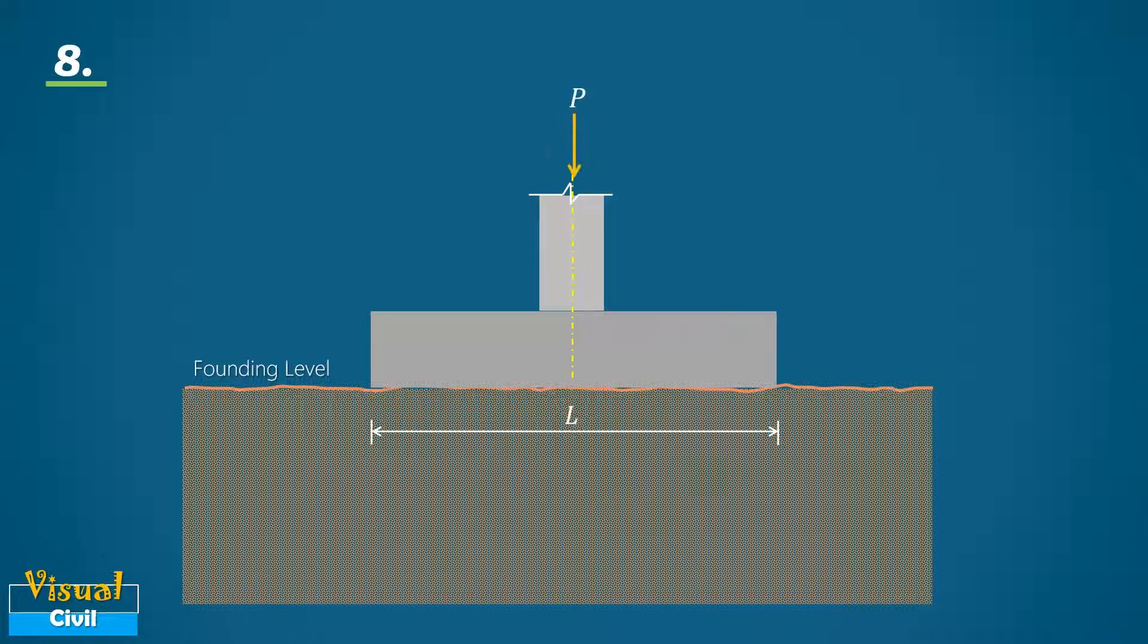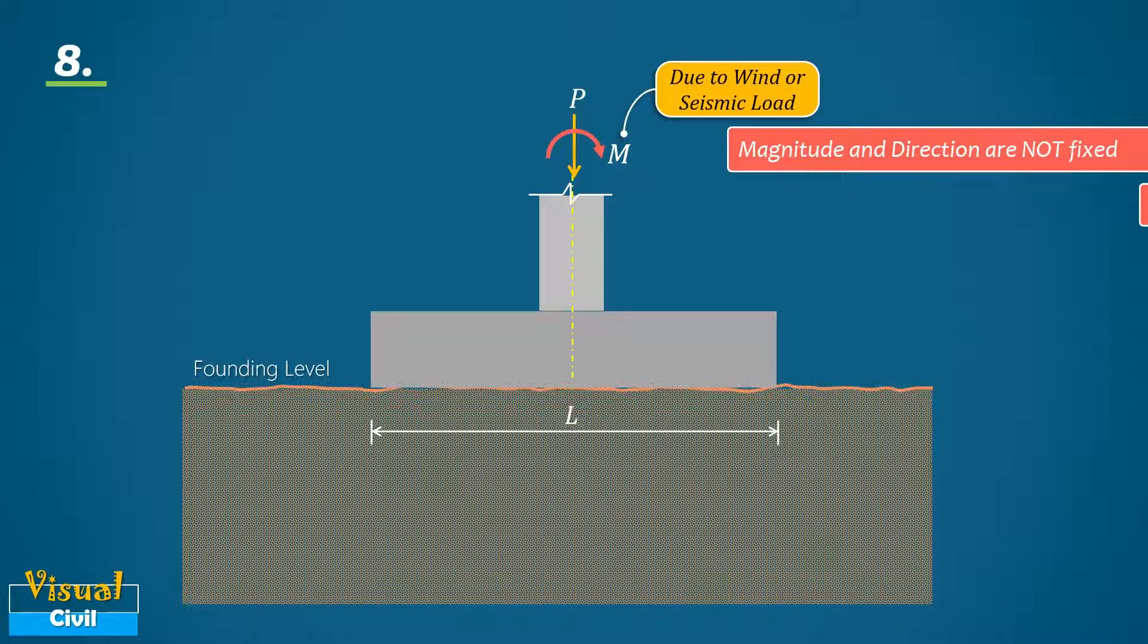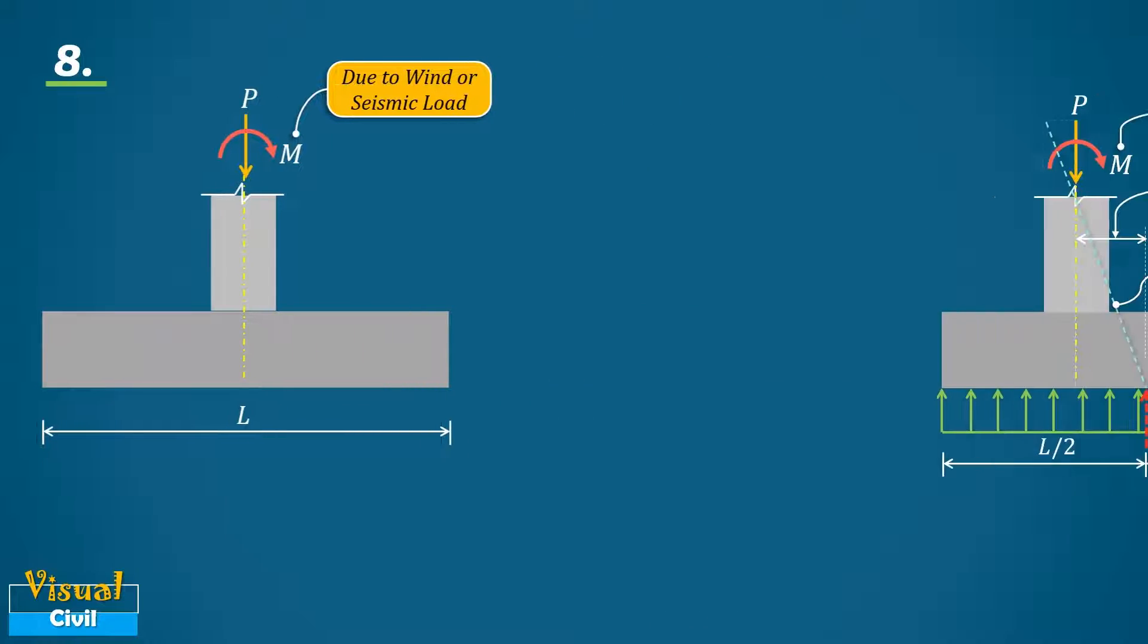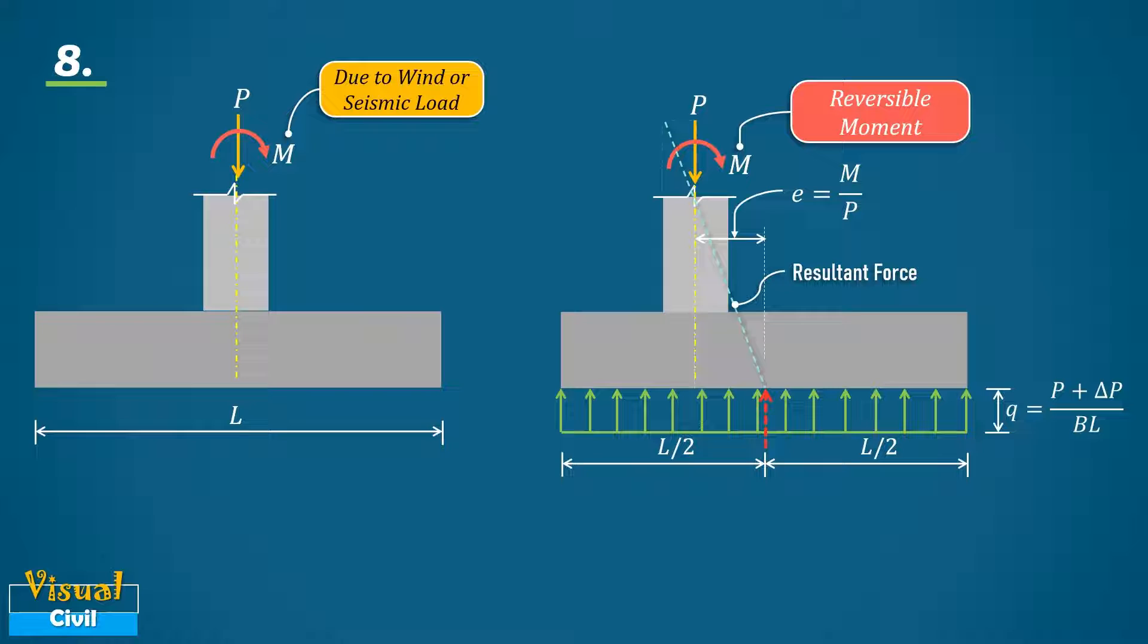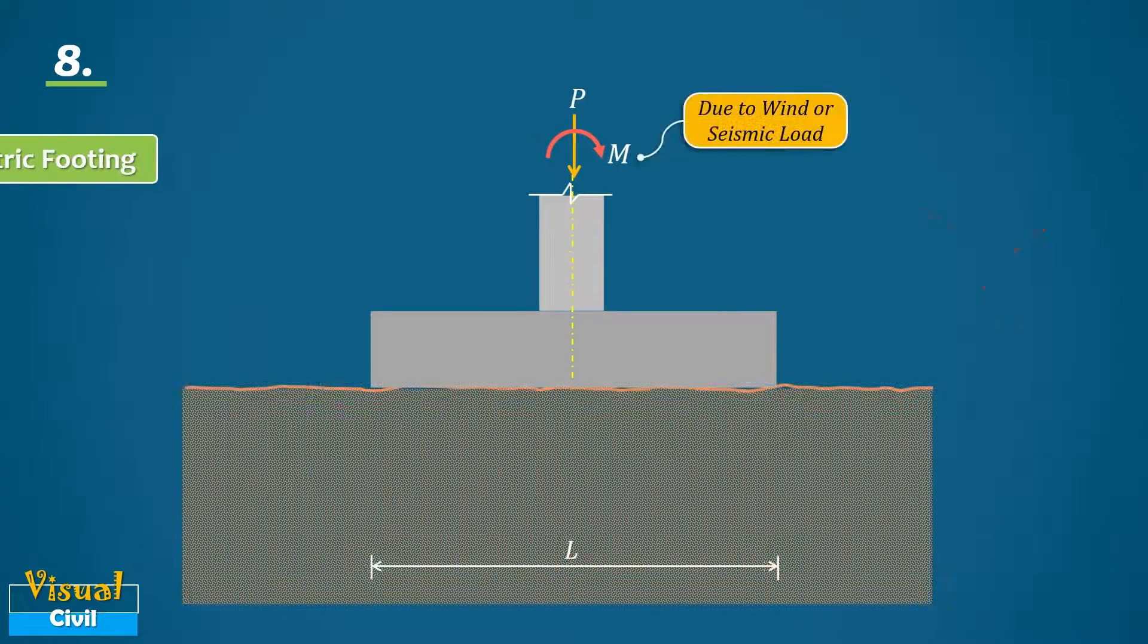When the moment is due to wind load or seismic load, then its magnitude and direction are not fixed. That means the moment is reversible. Here, shifting of the footing base relative to the column to make eccentricity nearly to zero is not desirable. In such cases, the symmetric footing with respect to the column is preferable.